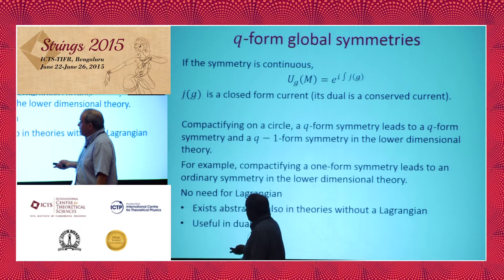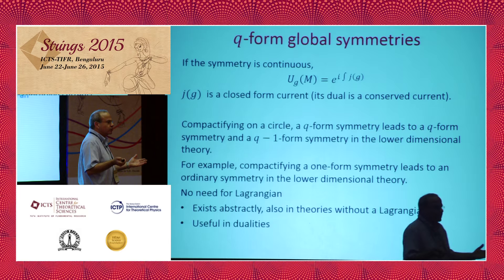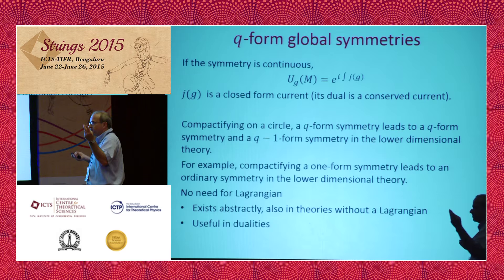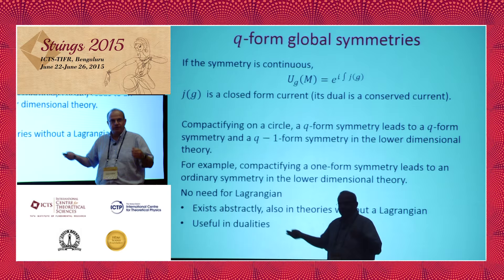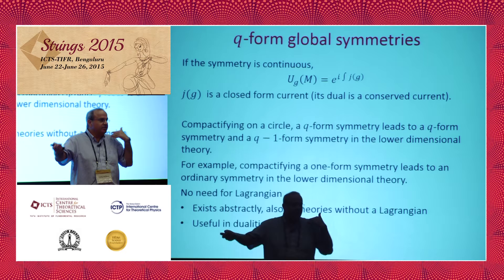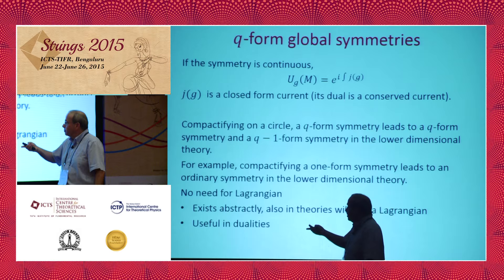I want to emphasize that nowhere here did I need a Lagrangian. I gave the defining properties in terms of the operators in the spectrum. The spectrum of the theory has these operators U which are topological, and I don't have to write an explicit expression in terms of fundamental fields. This has several consequences: first, we might have theories without a Lagrangian, so it's better to have a description intrinsic to the theory. Second, we will use it in dualities, where even if there is a Lagrangian description, it might be different in different dual frames.